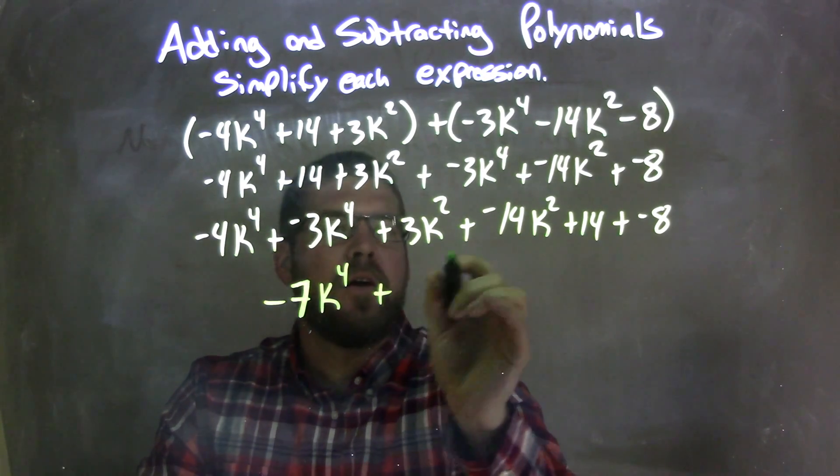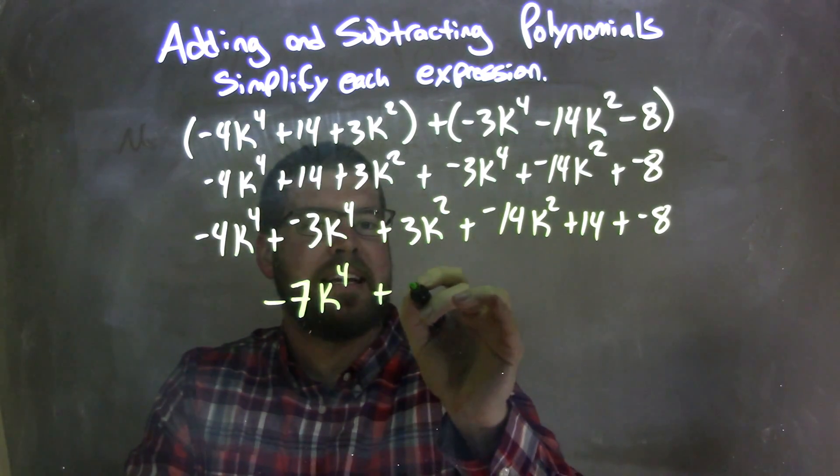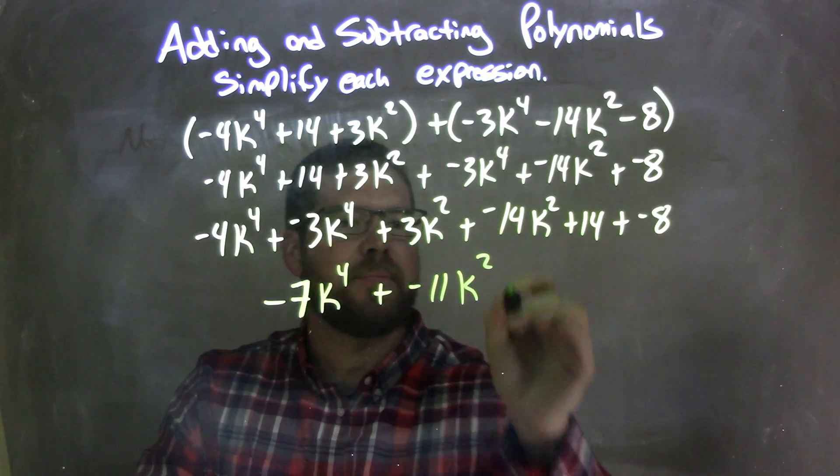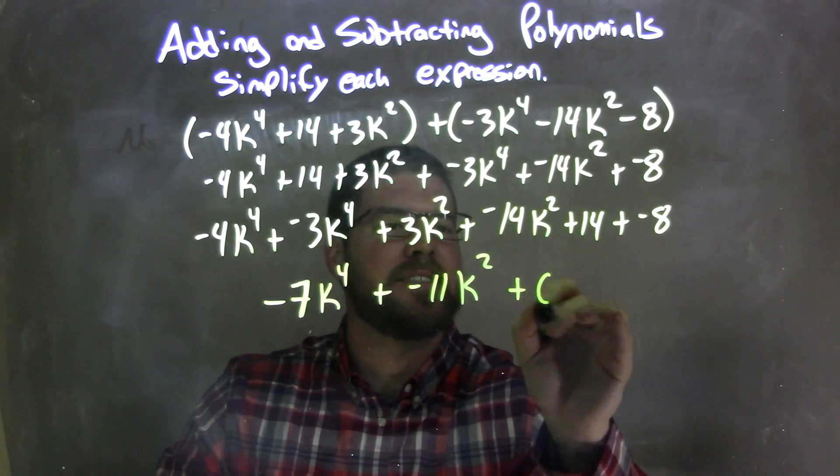Then, we have 3k squared, plus a negative 14k squared, is negative 11k squared. Then, 14 plus a negative 8, is a positive 6.